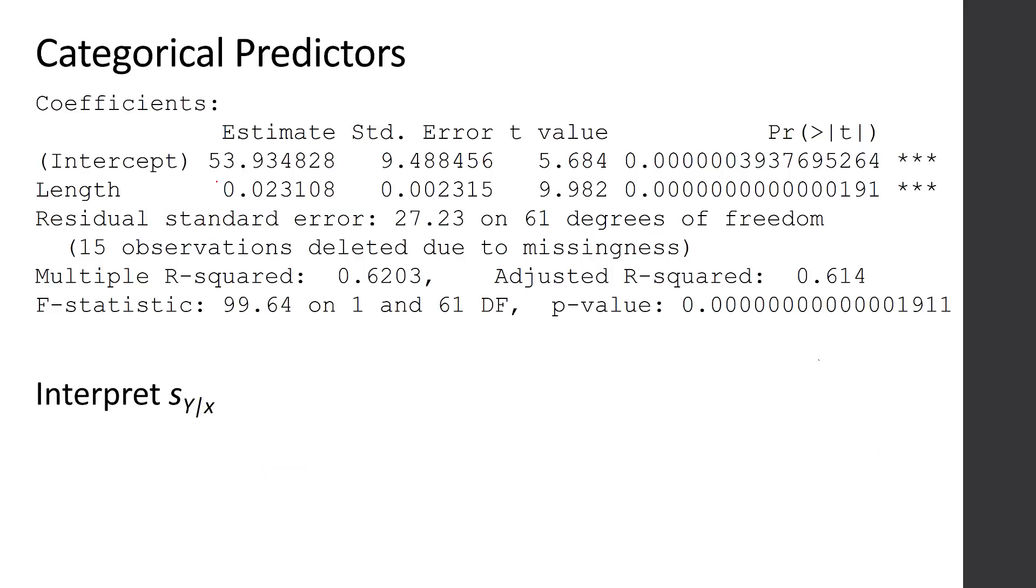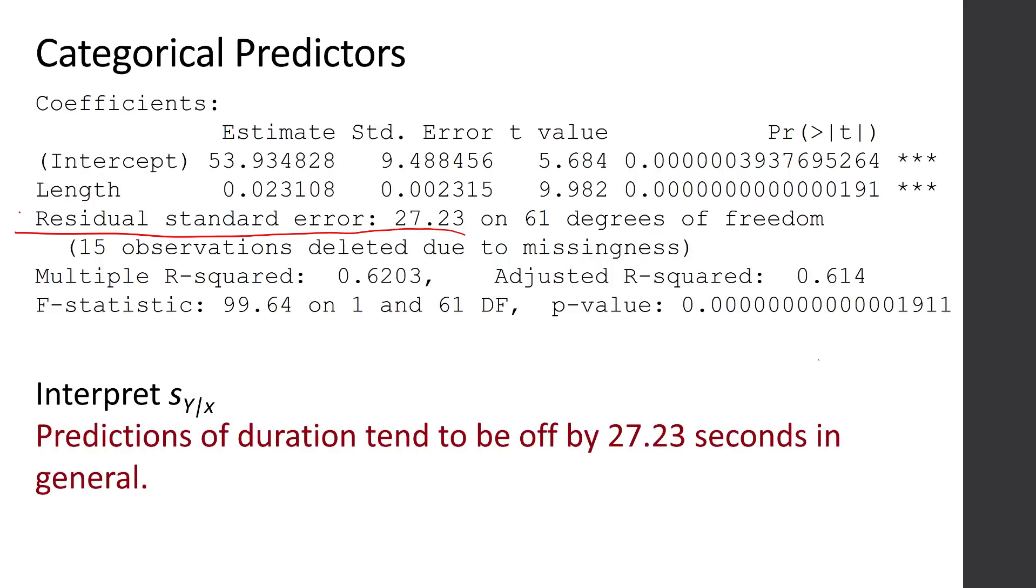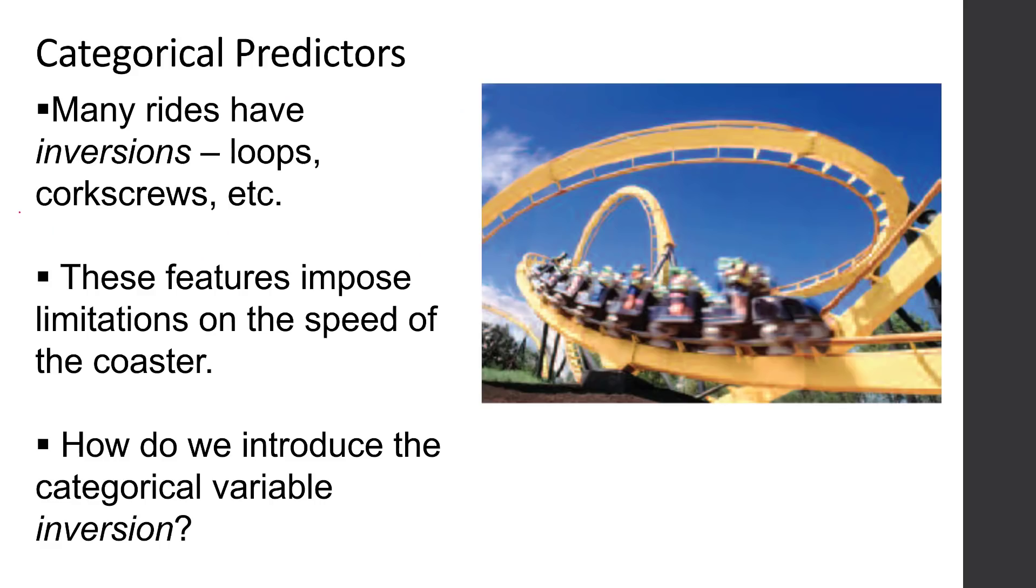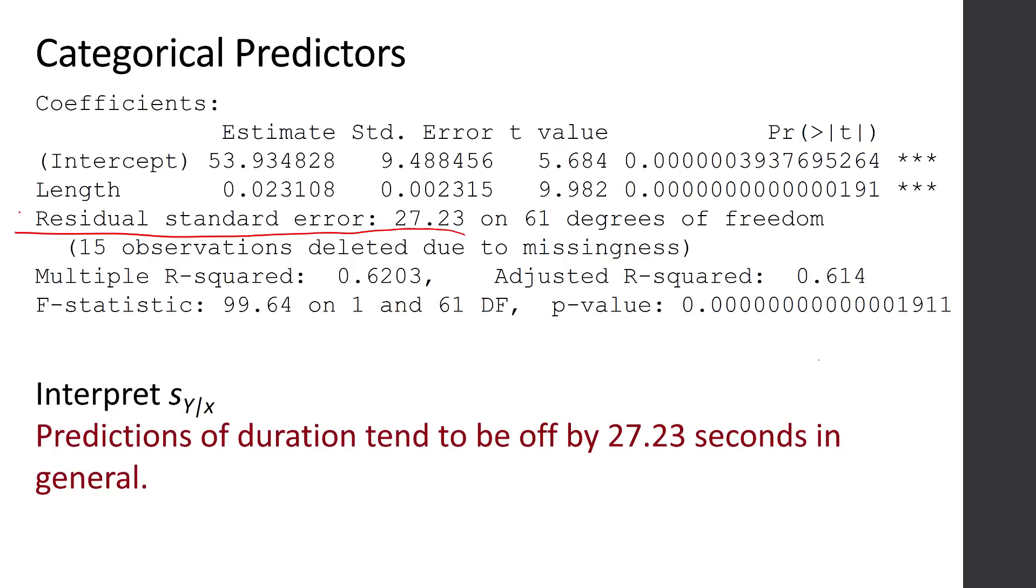Now let's interpret the residual standard error. It's 27.3. That's about the variability around the line. Predictions of duration tend to be off by 27.23 seconds in general. Obviously, if you're off by 27 seconds on your predictions, that's not really great. Lots of roller coaster rides aren't even 27 seconds long, so we want to do a little bit better.